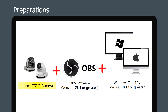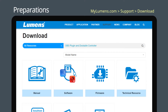Equipment requirements: Lumens PTZ IP cameras and OBS software version 26.1 or greater, running on Windows 7 or Windows 10, or Mac OS 10.13 or greater. Search and download the OBS plugin and dockable controller installation file from the Lumens website.